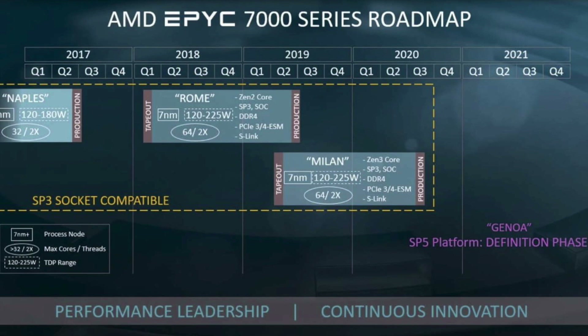Milan has similar overall specs to the previous generation: 64 cores, 2 threads per core, same TDP, same socket, etc. So far, we've found a lot of things that are going to be the same.